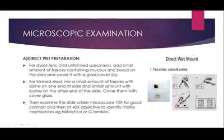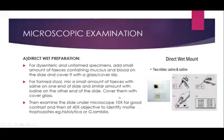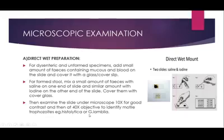The slide is then examined under the microscope, scanning all positions — both vertical and horizontal lines — without skipping any area. First examine using the 10x lens, then switch to the 40x objective lens to identify motile trophozoites, for example of Entamoeba histolytica or Giardia lamblia.